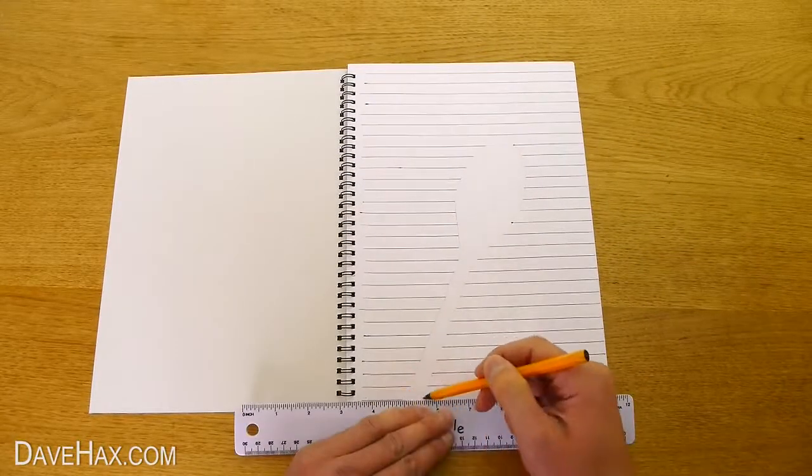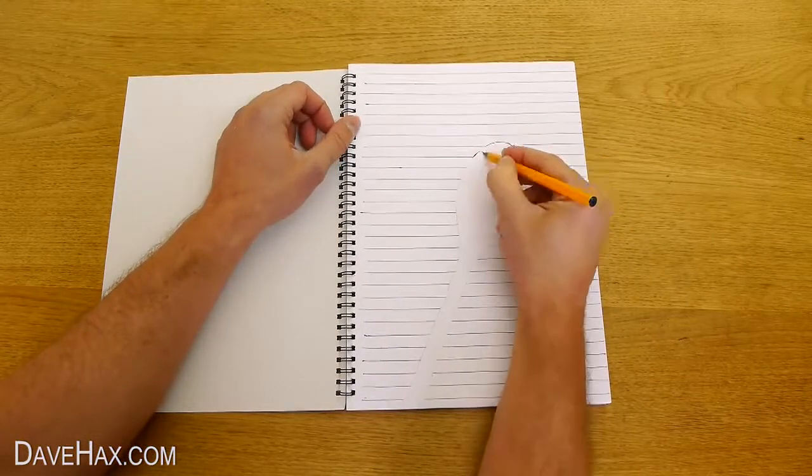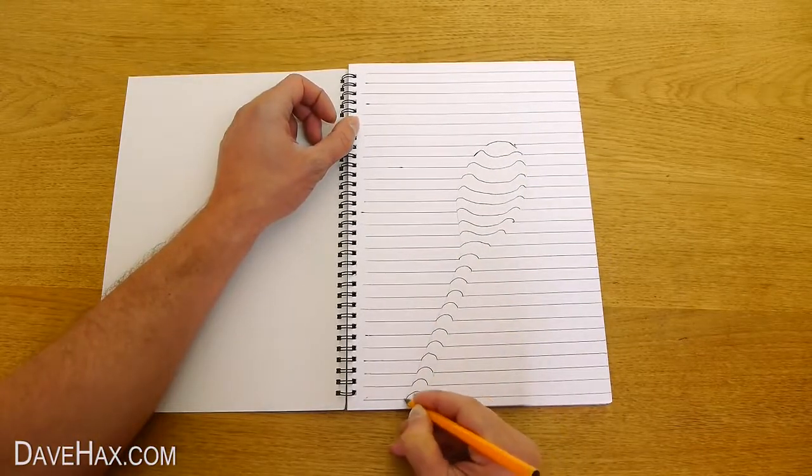When you're done, it should look like this. Next, we're going to use our pen to fill in the line and give our object a 3D effect. This should make it look like it's coming out of the page.